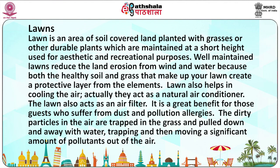Another element of outdoor gardening is lawns. A lawn is an area of soil-covered land planted with grasses or other durable plants, maintained at a short height, used for aesthetic and recreational purposes. Well-maintained lawns reduce land erosion from wind and water because healthy soil and grasses create a protective layer. Lawns also help in cooling the air — they act as a natural air conditioner. The lawn also acts as an air filter, trapping dirty particles and pollutants out of the air.